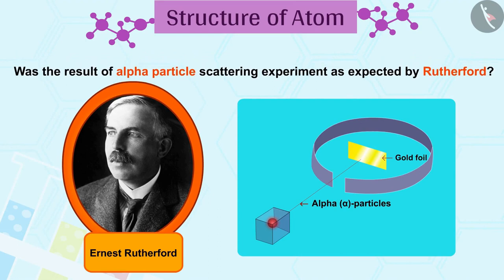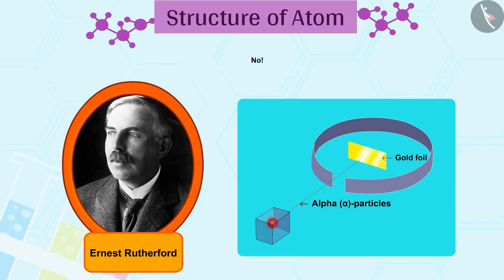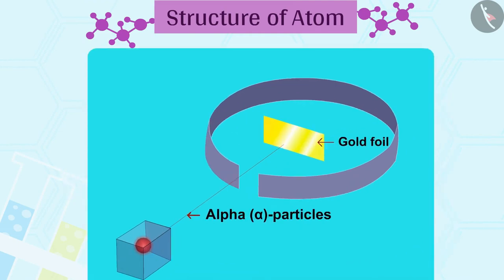Was the result of alpha particle scattering experiment as expected by Rutherford? No. Rather, the alpha particle scattering experiment gave totally unexpected results. 1. Most of the fast-moving alpha particles passed straight through the gold foil.